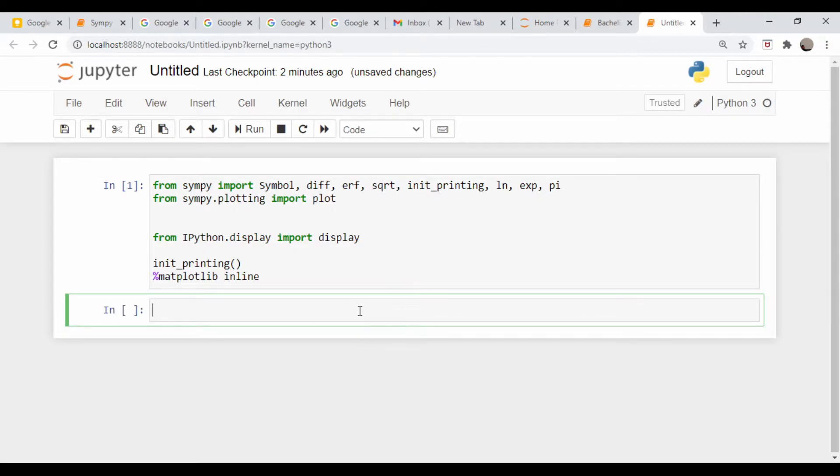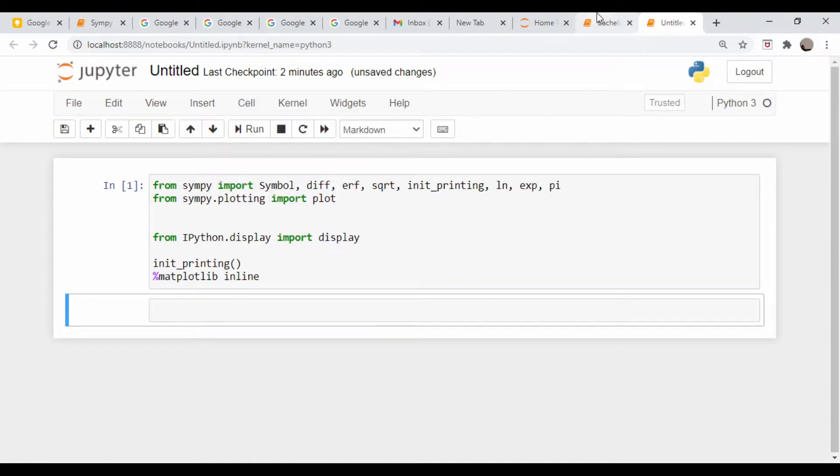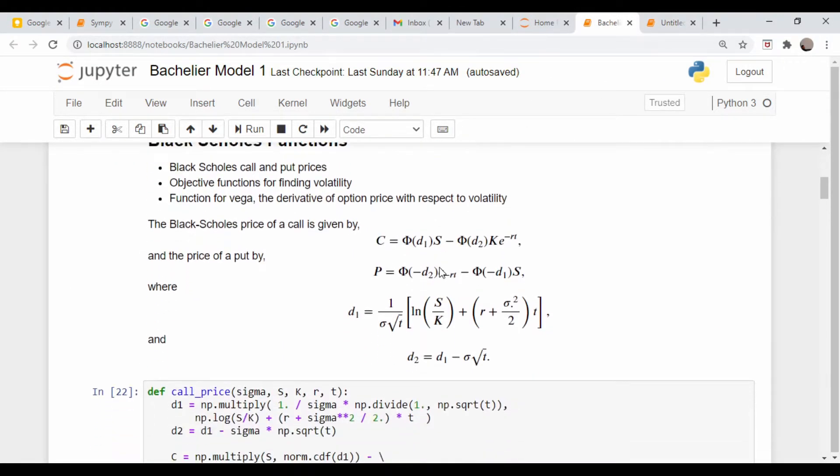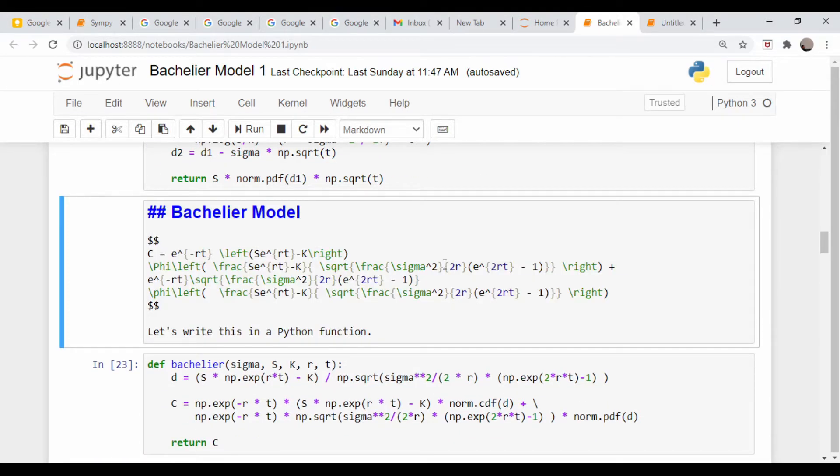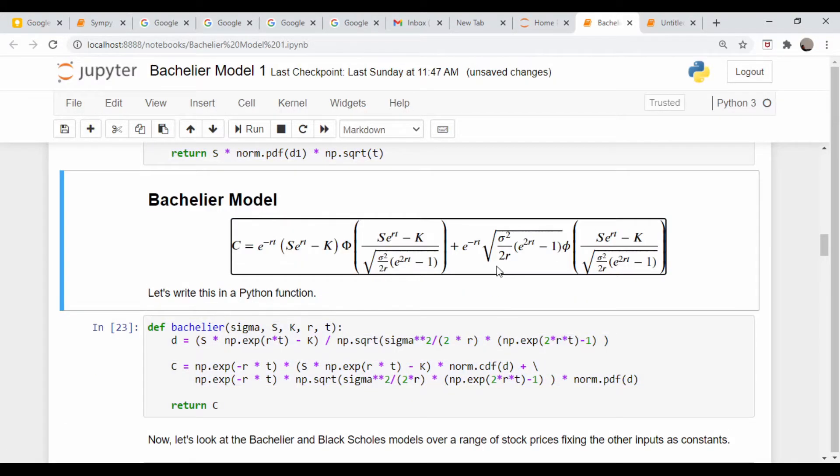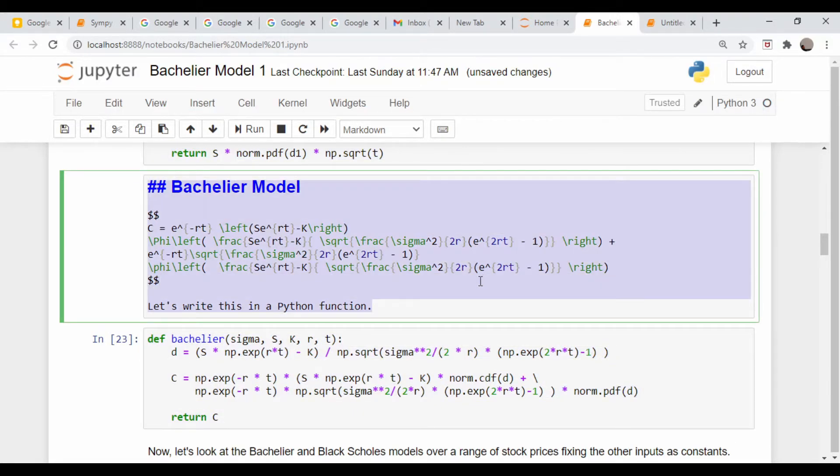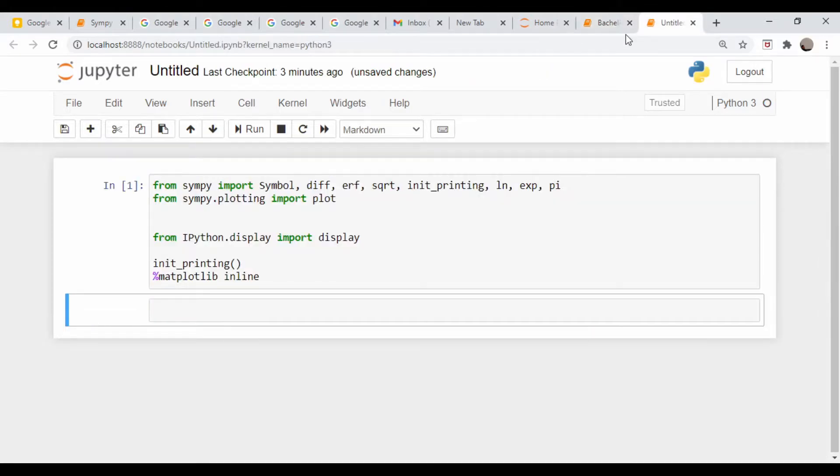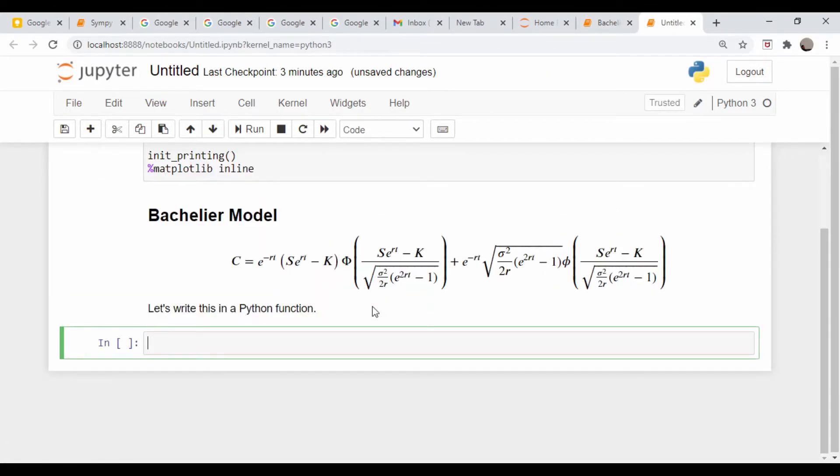What I'm going to do is copy the Bachelier call price function from the previous notebook. Let's go over here and dig that up. Here it is. So we're just going to copy all of this. Copy. And we'll just drop it in here for our reference.